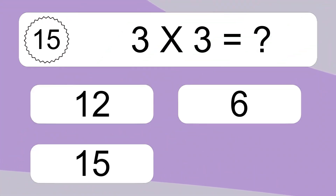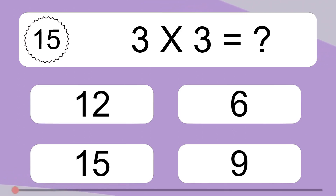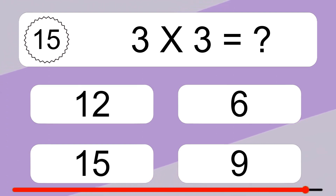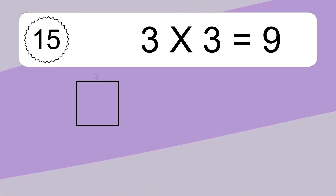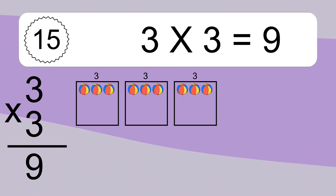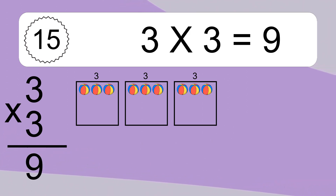3 times 3 equals what? 3 times 3 equals 9. We have 3 boxes, and each box has 3 colorful balls inside. If you count all the balls in all the boxes together, you will have 3 times 3 balls. This equals 9 balls.